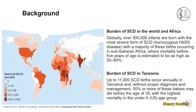Globally, it is estimated that 300,000 babies are born with sickle cell disease annually, with the majority being born in sub-Saharan Africa, where mortality of babies before the age of five is estimated to be as high as 58%. Tanzania is the fifth country in the world with the highest sickle cell disease birth prevalence, with an estimated 11,000 babies born with sickle cell disease annually. Without proper diagnosis and management, 50% or more of these babies may die before their teens, with the highest mortality being under the age of five years.